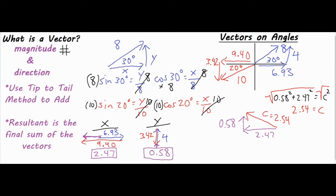We also need to find the angle the vector is pointing. When you have sides and want an angle, you use inverse trig functions. I'll use the inverse of tangent. Tangent is opposite over adjacent from SOH-CAH-TOA, and when you take the inverse tangent of that fraction, you get 13.21 degrees.